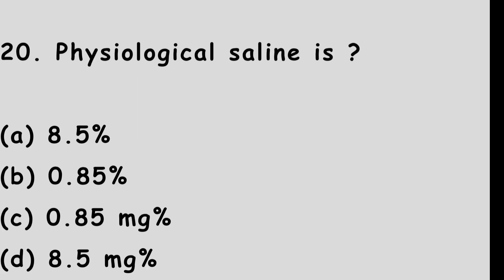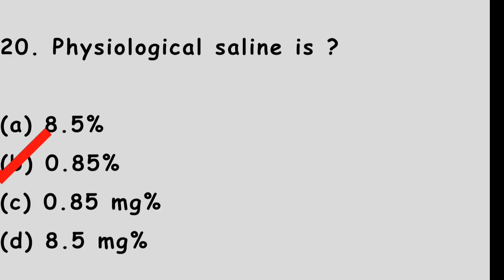Question number 20: Physiological saline is — Option A: 8.5%. Option B: 0.85%. Option C: 0.85 milligram percent. Option D: 8.5 milligram percent. The right answer is option B. 0.85% sodium chloride is physiological saline or normal saline.